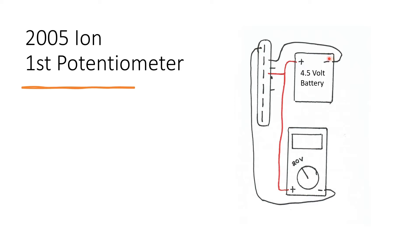The negative from the battery should connect to the second pin, and then the positive from the battery and the multimeter should connect to the third pin just like this.